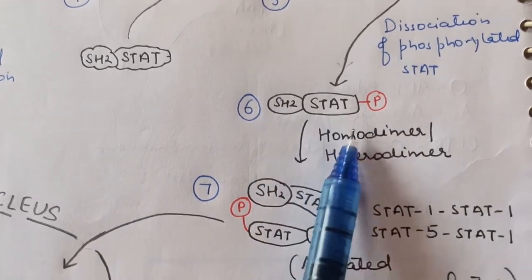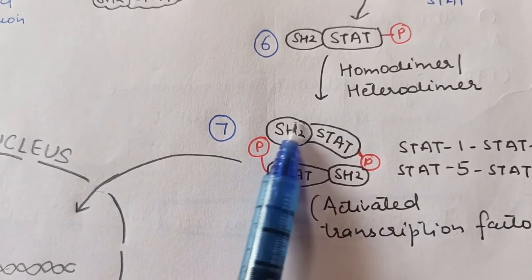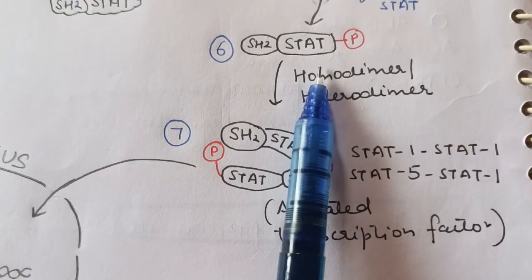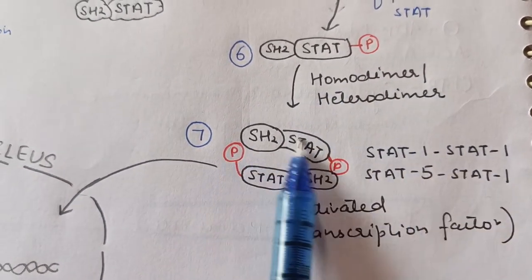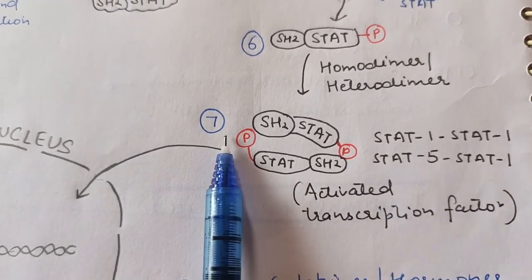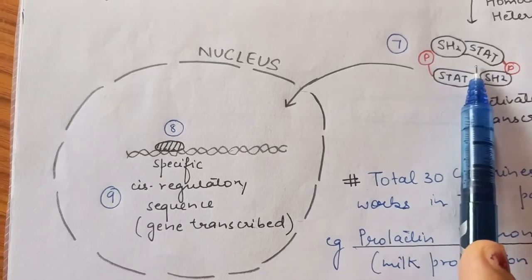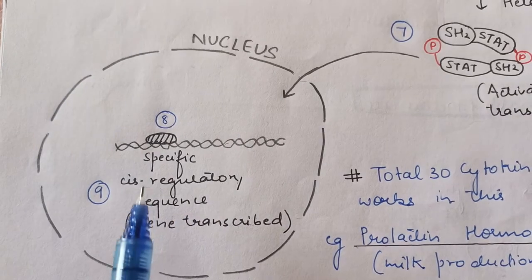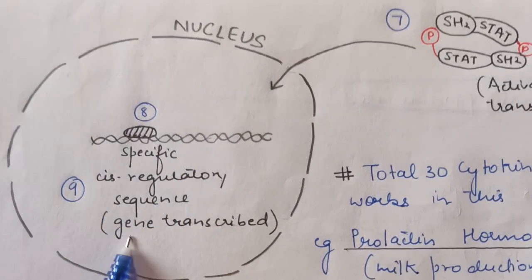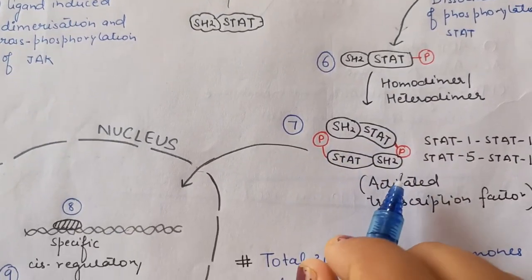The phosphorylated or activated STAT then forms a homodimer or heterodimer. Two similar STAT molecules link together to form a homodimer, while two dissimilar STAT molecules link to form a heterodimer. This homo- or heterodimer acts as an activated transcription factor, which enters the nucleus and binds to DNA at a specific cis-regulatory sequence to activate gene transcription.